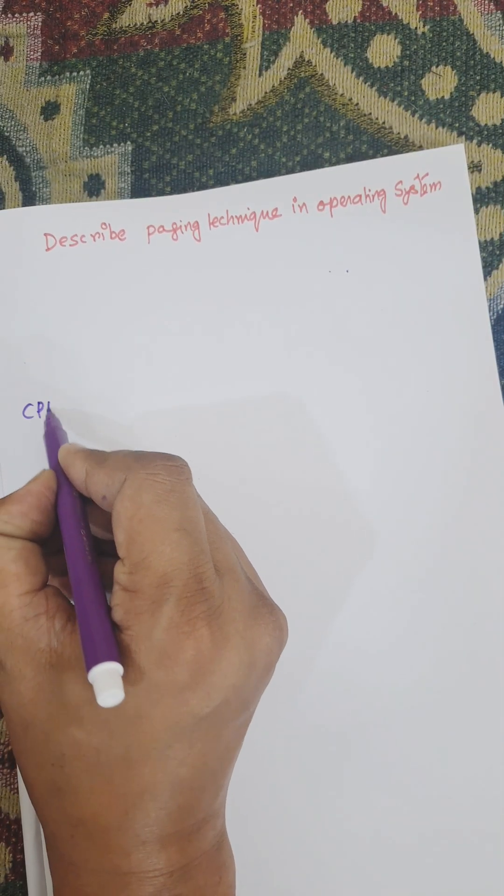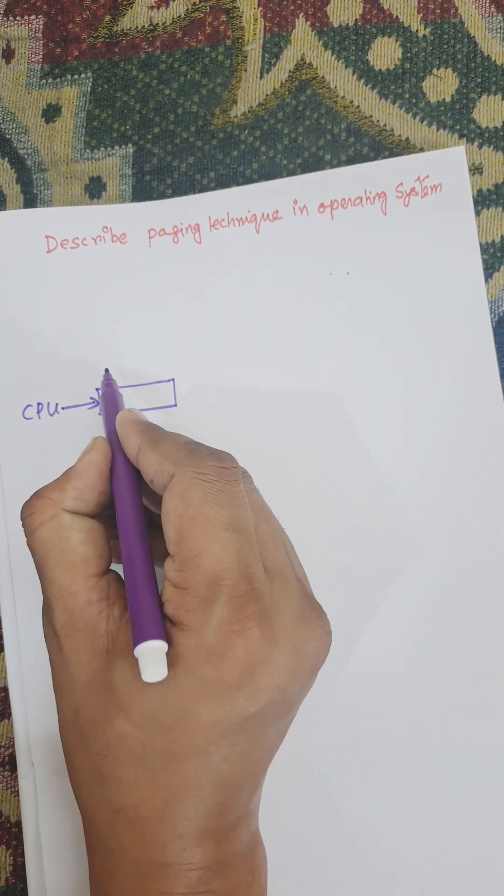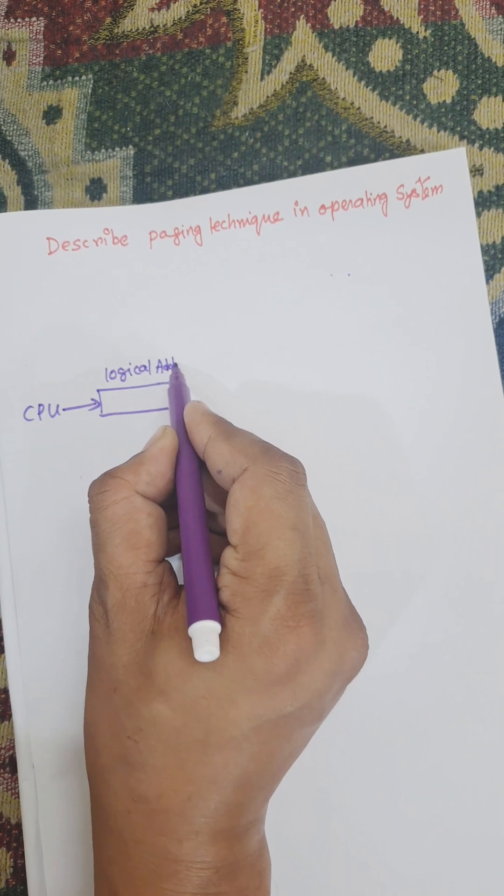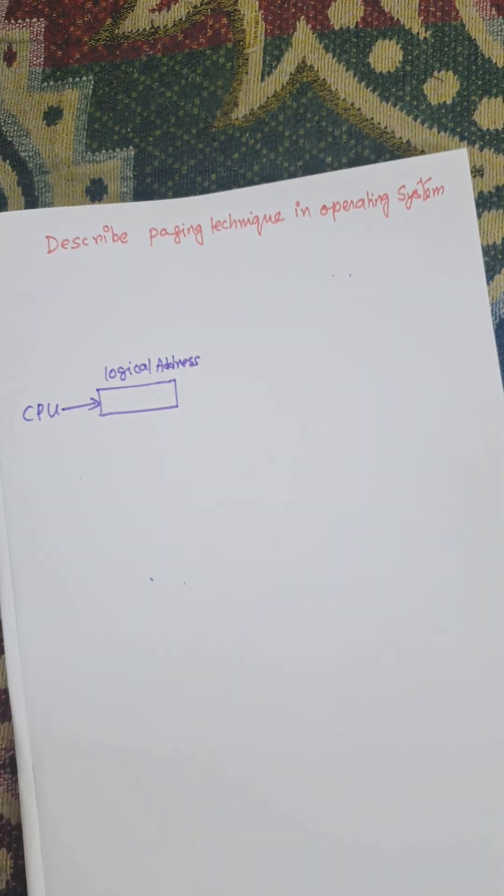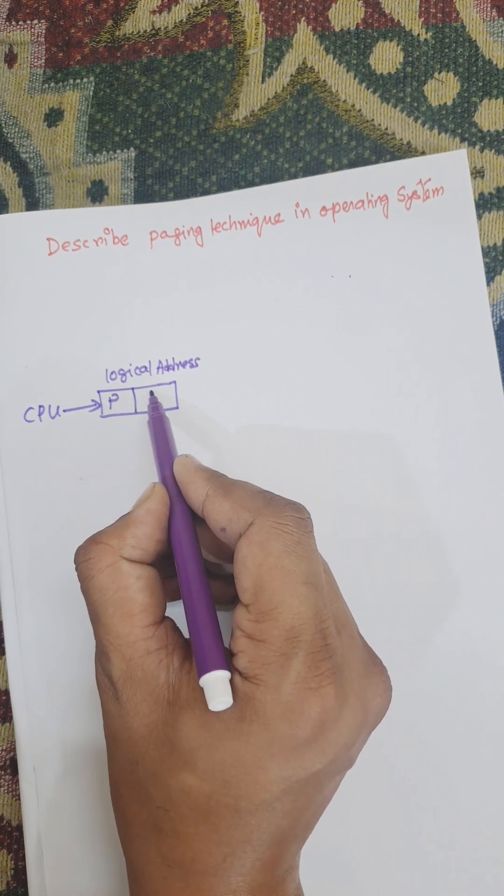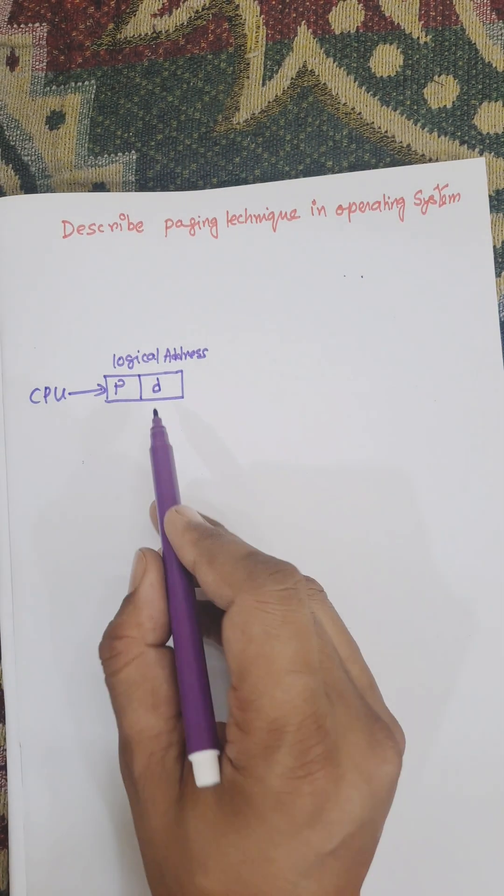The corresponding logical address when CPU refers to any address is known as logical address. This logical address consists of two parts: one is page number P and another is D for offset. P is the page number and D is the offset.